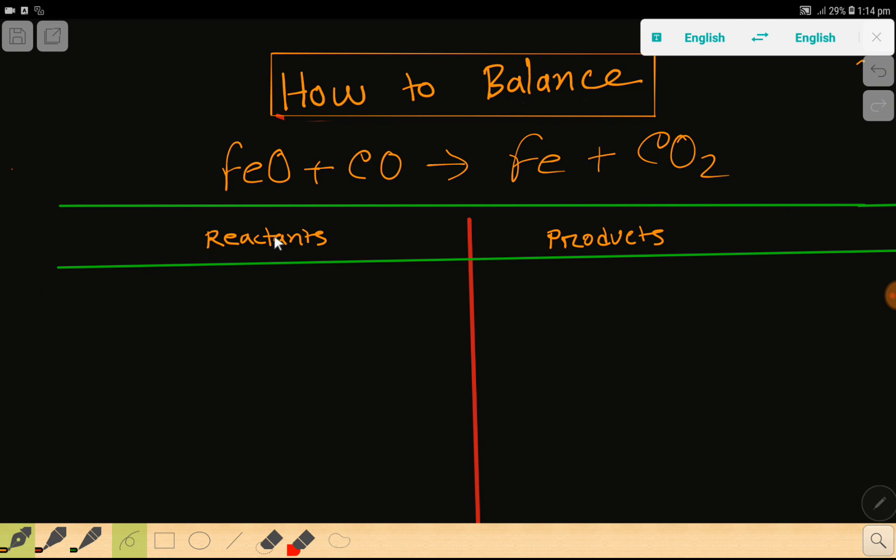In the reactant side we have iron, which is one. Then we have oxygen here, one. Then in carbon monoxide we have carbon, which is one, then we have one oxygen. So basically we are getting two oxygen.